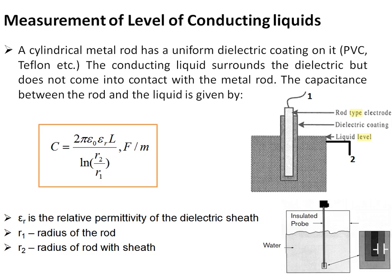For conducting liquids, a rod-type electrode is used with a dielectric coating surrounding it, acting as an insulator. Here the dielectric constant throughout the electrode is constant and does not change. What changes is the overlapping length L of the concentric cylinder formed by the conducting liquid around the dielectric coating. As the liquid level rises, the overlapping length L increases, which directly affects the capacitance.